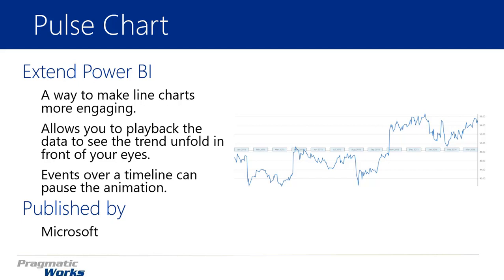The example I'm going to show you is the U.S. stock market — specifically the S&P 500 — and we'll look at what kind of economic events might have caused increases or decreases in the stock index. We're going to see how those trends unfold right before our eyes as we use the animation features.